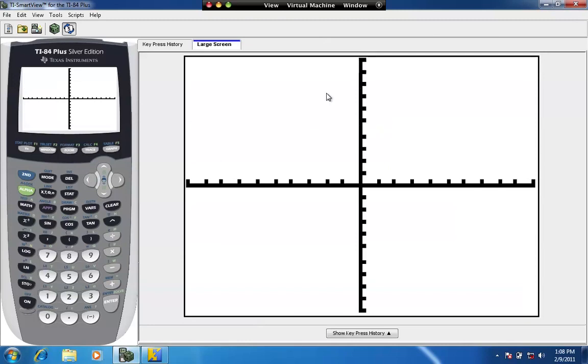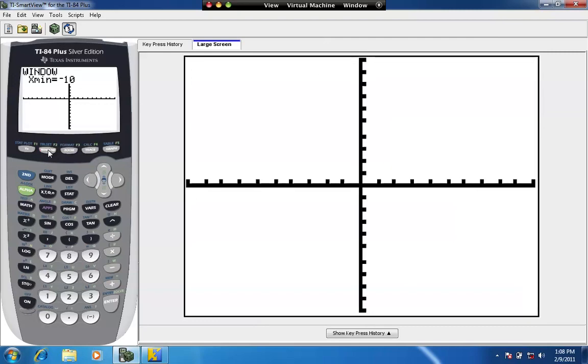And when you're in standard zoom we have 10 notches, we go from negative 10 on the x-axis to positive 10, and then we go from negative 10 on the y-axis to positive 10. And if we press the window key here we can verify these are our standard zoom settings. Negative 10 to positive 10 x min x max, negative 10 to positive 10 on y min y max. And y scale equal 1 is going to tell us that each notch on the axis represents 1 unit.